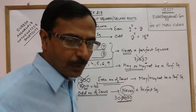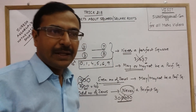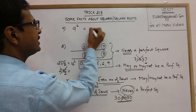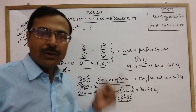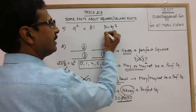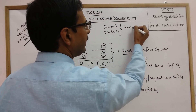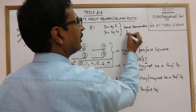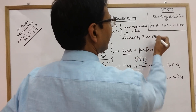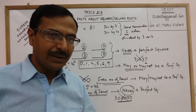Now we come to another important property relating to the square of any number. The square of a natural number will either be divisible by 3, divisible by 4, or leave remainder 1 when divided by 3 or 4. For example, 9 squared is 81, and 81 is divisible by 3, so it falls in that category.